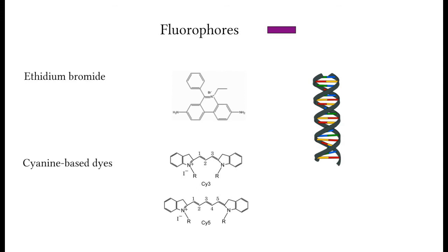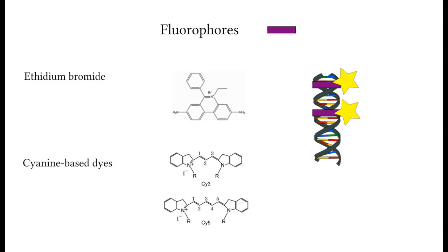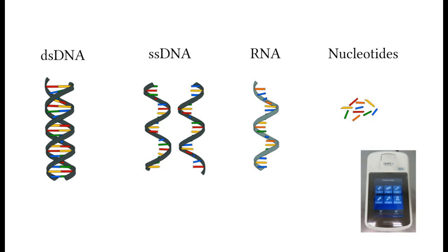Molecules which exhibit fluorescence are called fluorophores. Several fluorophores, for example, ethidium bromide and cyanine-based dyes, are used for detecting nucleic acids. These dyes exhibit very low fluorescence by themselves, but upon binding to nucleic acids, they undergo conformational changes which increases their fluorescence by 20 to 1000 fold.